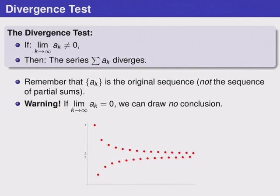An important warning. If the limit of the a_k's is zero, then we cannot draw any conclusion. There are series that converge when a_k goes to zero, but there's also series that diverge when a_k goes to zero.